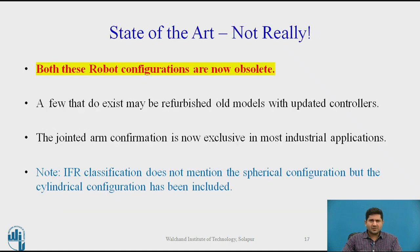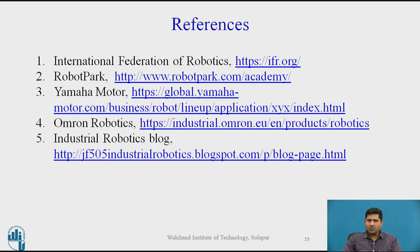Both cylindrical and spherical configurations are now obsolete. Even if you come across them, they are probably older models refurbished with updated controllers. The IFR doesn't even include spherical configuration as one of the standard options anymore. Good information sources include the International Federation of Robotics website, Robot Park, Yamaha, OMRON for application information, and industrial robot blogs — since some older robot information is more easily found on blogs than on current manufacturer websites.